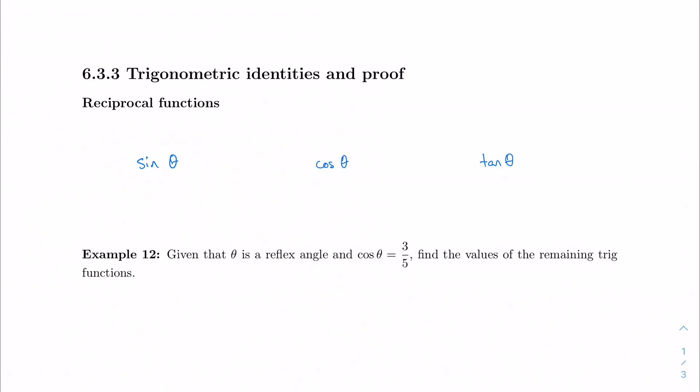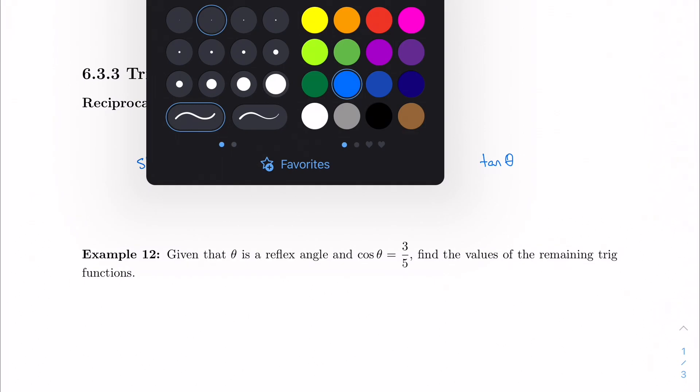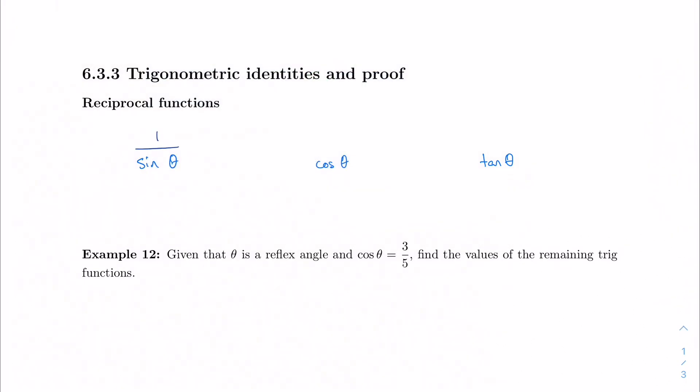So for example, this means that 1 over sine is what we call cosecant of theta. So this is cosecant. And sometimes IB, especially our book, will use this abbreviation instead. But CSC is generally the commonly accepted one.